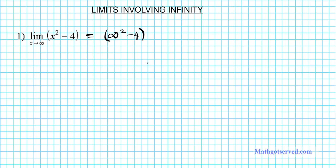Now we're just going to carry out some computations involving the arithmetic of infinity to evaluate this expression. Infinity squared is simply going to be infinity minus 4. Infinity is so large that when you subtract 4 from it, it has no impact whatsoever. So our answer is infinity.